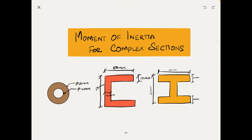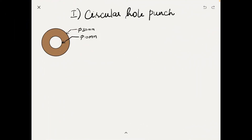Let's dive in. The first cross-section for today is a circular hole punch, which is nothing but a solid circle with a hole in its center. In our example, the outer diameter is 30 mm and the hole diameter is 10 mm. Before starting to calculate the moment of inertia, it is always best practice to calculate the centroid of the section. The centroid is the center of mass of the section — or for a simple understanding, the point on which the entire section could be perfectly balanced.